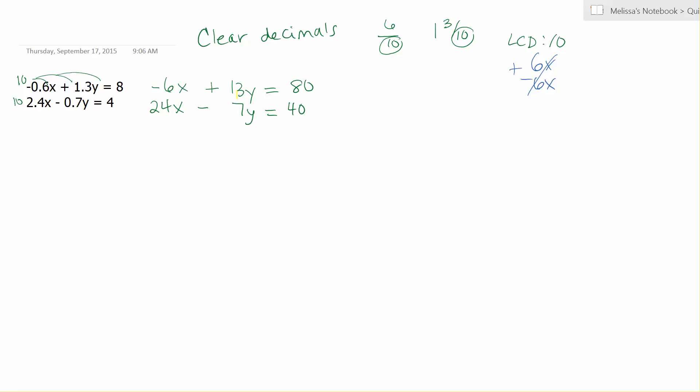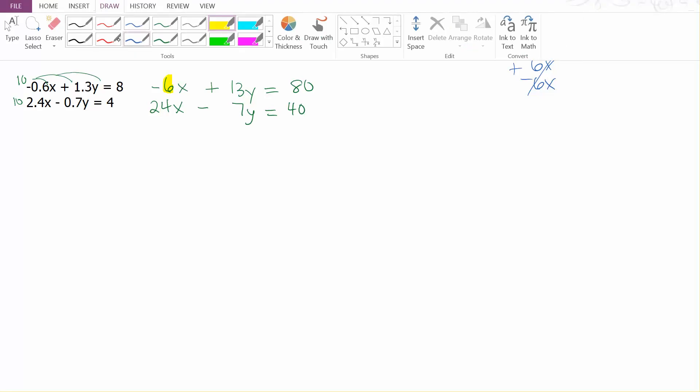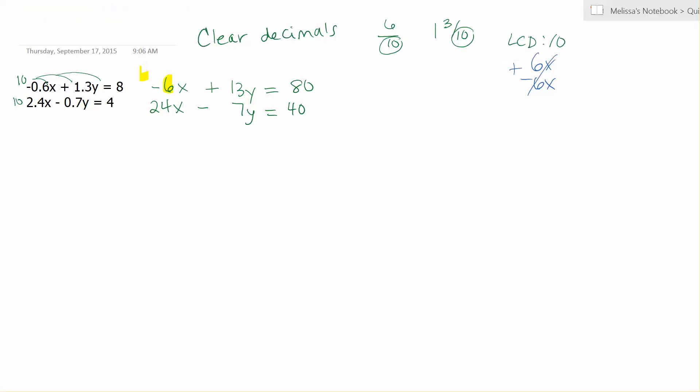So look at the x's. You have 6 and 24. If I multiply 6 by 4, I get 24. Also notice that it's negative 6, which if I multiply by 4, gives negative 24, so I'll get that opposite sign situation that I need. You have to have one positive and one negative.